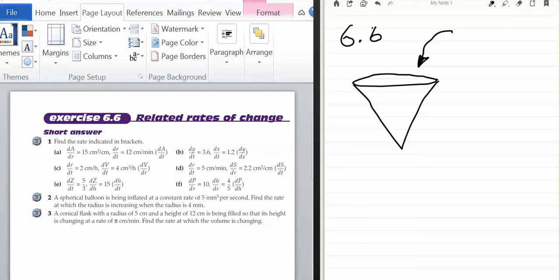Number 3 talks about a conical flask. Conical means a cone. So it's the flask in the shape of the cone as I've drawn over on the right. It has a radius of 5 centimeters. So that's 5 and has a height of 12. So that there is 12 and it's being filled at a rate of pi centimeters per minute.